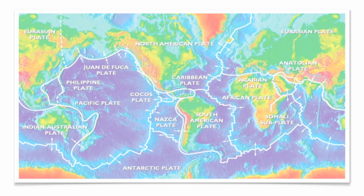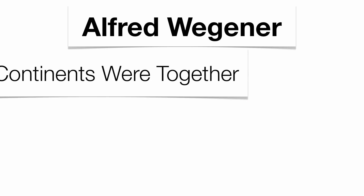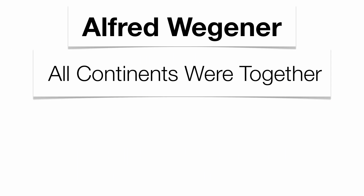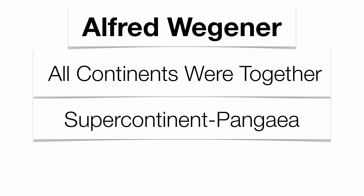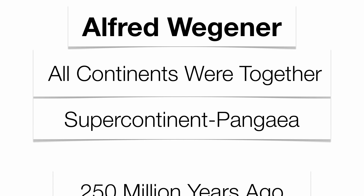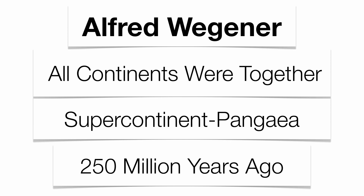Alfred Wegener was the man who came up with this idea. He proposed the ludicrous idea that our continents were all a single landmass that he called Pangaea, and supposedly this existed about 250 million years ago.